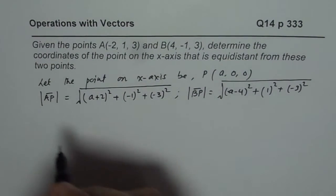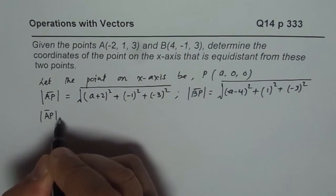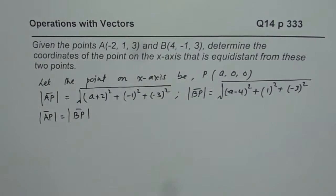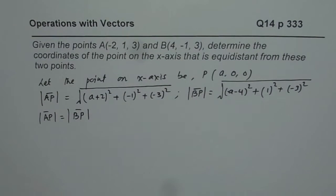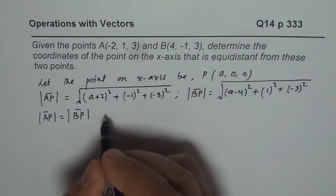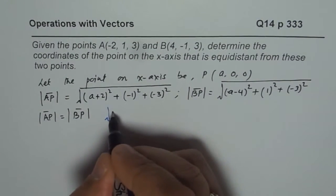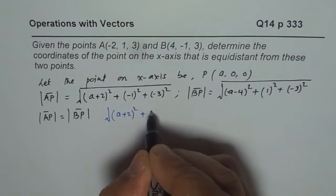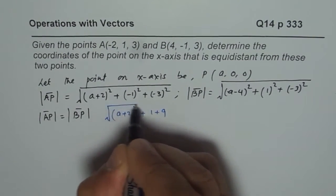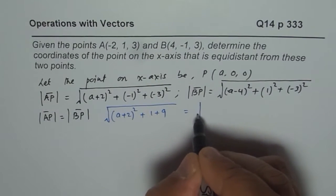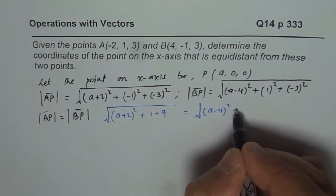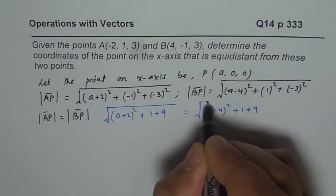Now, these two should be equal. So what we are saying is that the magnitude from AP should be equal to that of BP. That is what we need. So let us equate these two and solve. We have now square root of (a + 2)² plus 1 plus 9 equals to square root of (a - 4)² plus 1 plus 9.